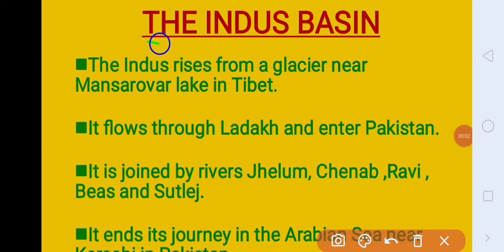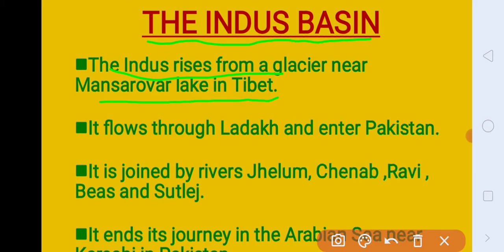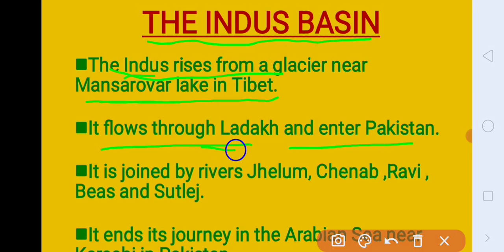Next is the Indus Basin. The Indus rises from the glacier near the Mansarovar Lake in Tibet — jahaan se Brahmaputra River bhi start hoti hai, same ussi jagah se Mansarovar Lake se hi ek aur river rise karti hai, that is Indus River. It flows through Ladakh and enters Pakistan. Or ye river Ladakh through India mein enter karti hai aur phir Pakistan mein enter karti hai. It is joined by the rivers Jhelum, Chenab, Ravi, Beas, and Satluj. Or inki jo tributaries hain jo isko join karti hain aage.